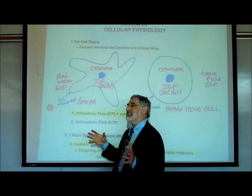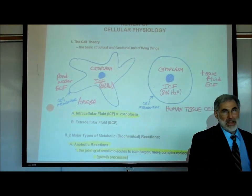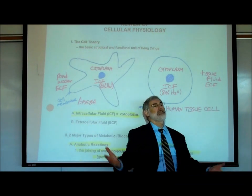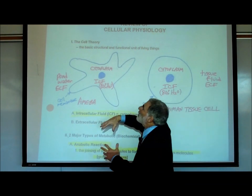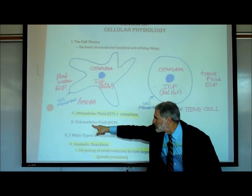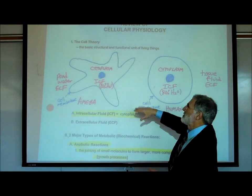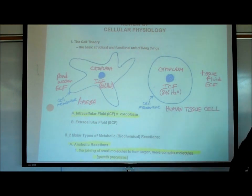All living cells have to live in a fluid environment or they'll die. An amoeba lives in pond water — that's its fluid environment. The fluid around the cell is also known as ECF, or extracellular fluid. Extracellular means outside the cell. So an amoeba has fluid inside the cell — it's 80% water — and it lives in a fluid environment outside the cell.